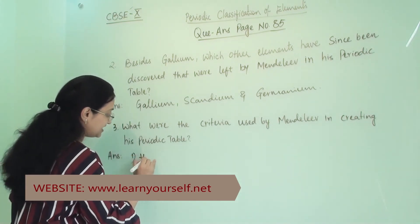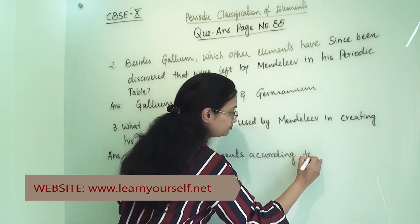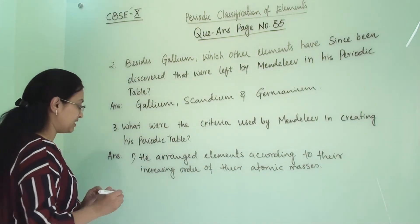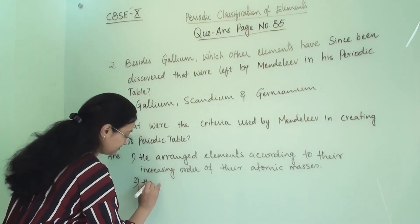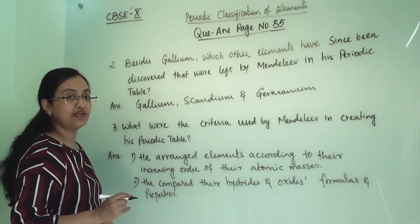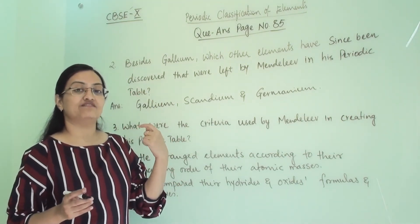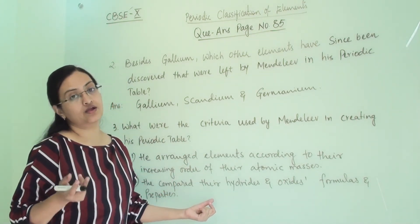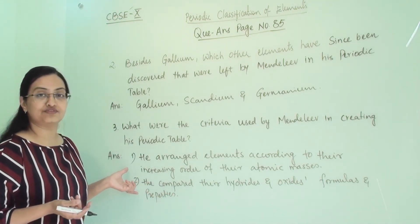So their hydrides and oxides properties and molecular formulas he compared. So these two criteria we have to write here. The first one is he arranged according to increasing order of their atomic masses, and the second is he compared formulas. He placed all those elements in the same group which have the same generalized formula through hydride and oxides. So these were the two main criteria of his arrangement.